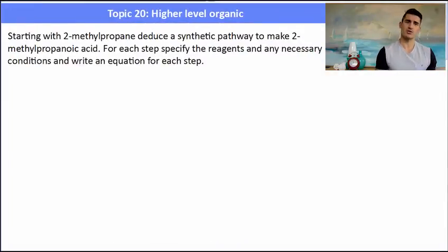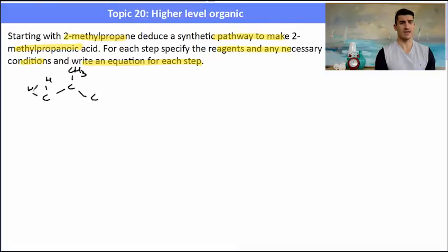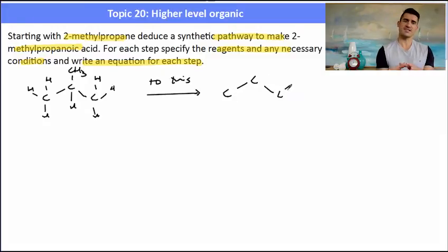Okay the last one starting with 2-methyl propane deduce a synthetic pathway to make 2-methyl propanoic acid. For each step specify the reagents and necessary conditions and write an equation for each step. So similar to the last one. So 2-methyl propane and I need to turn that into 2-methyl propanoic acid. So 2-methyl propane has the methyl group on the second carbon and then we have a hydrocarbon around that and I need to turn it into methyl propanoic acid. So I need to get an acid functional group on the chain. Now this is going to be a very similar reaction to the last one.